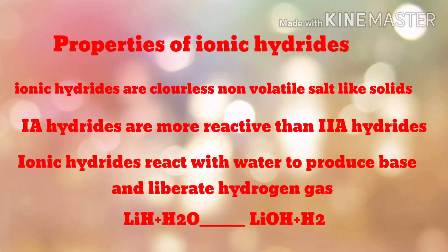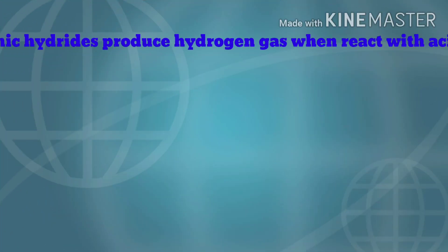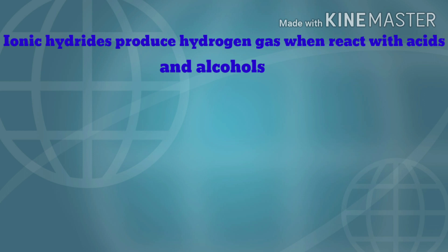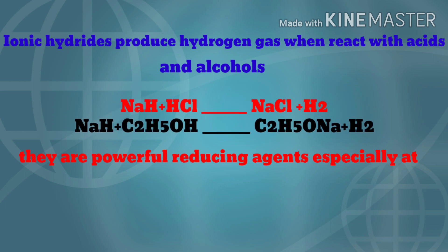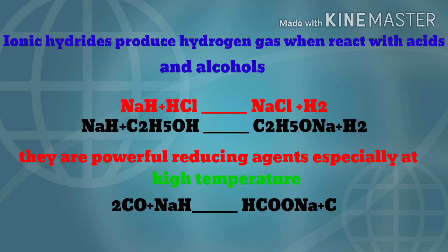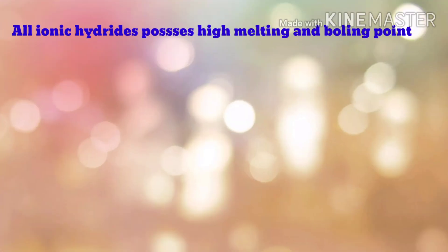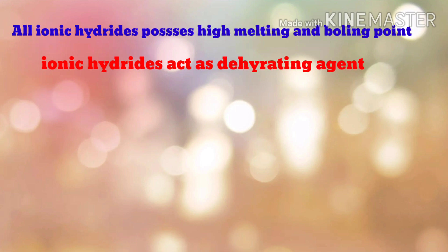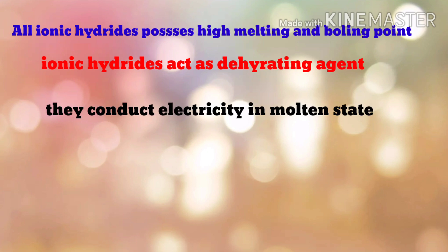Ionic hydrides react with water to produce a base and hydrogen gas. They also produce hydrogen gas when reacted with acid and alcohol. They are powerful reducing agents, especially at high temperature. Ionic hydrides have high melting and boiling points and also act as dehydrating agents.